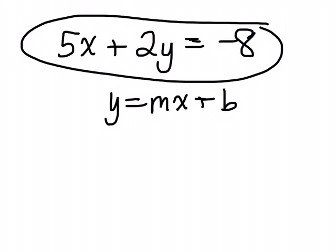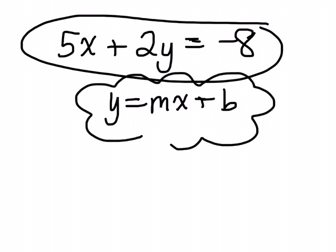Now remember, when it's written in slope-intercept form, only when it's written in slope-intercept form, m represents what? Slope. Slope, and b represents the y-intercept.